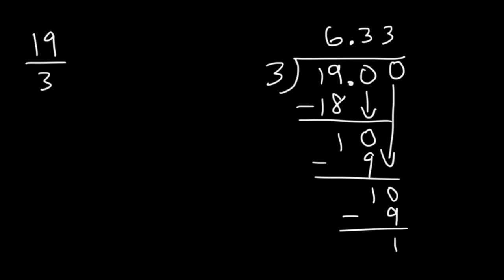Once you see that happening, it's just going to keep on going. So basically, this is 6.333333, and it goes on forever, which you can write as 6.3 repeating. And so here's the answer for this problem.